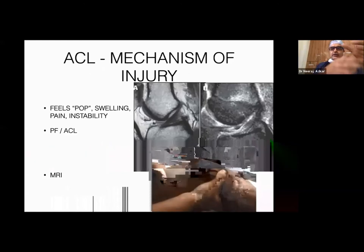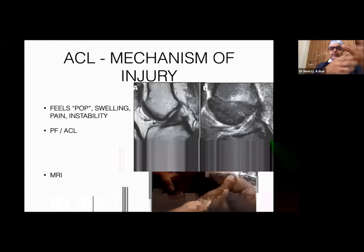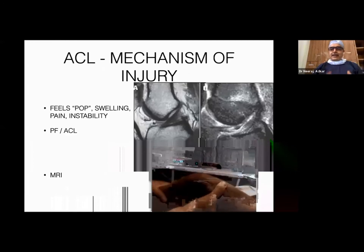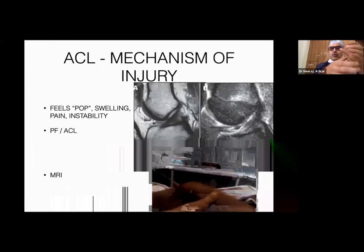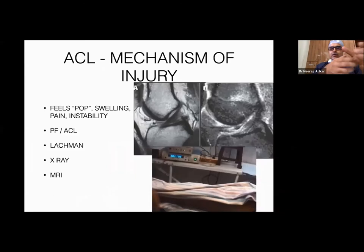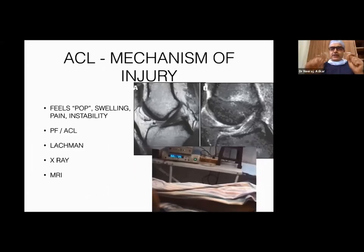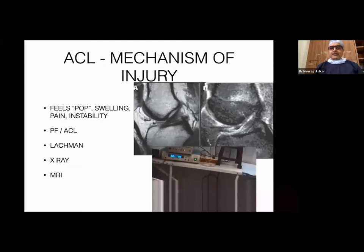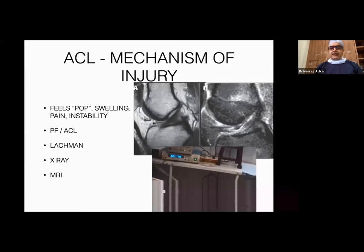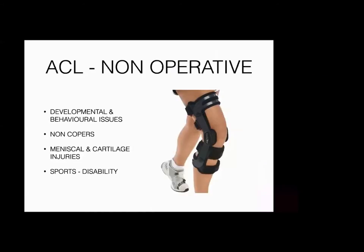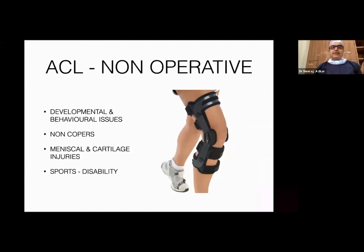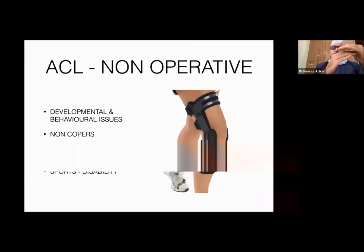The Lachman test is used to diagnose ACL injury — you pull the tibia in front of the femur and excessive movement at the femorotibial joint indicates ACL injury. MRI gives a clear picture of the torn ligament.